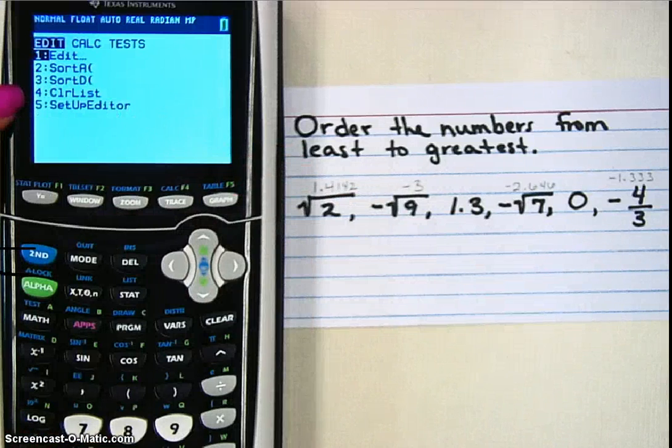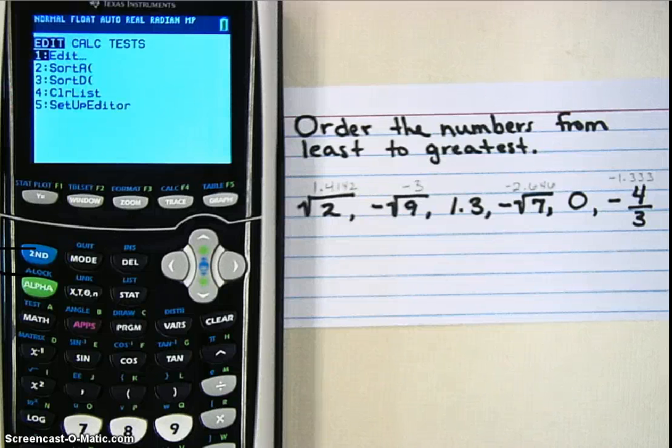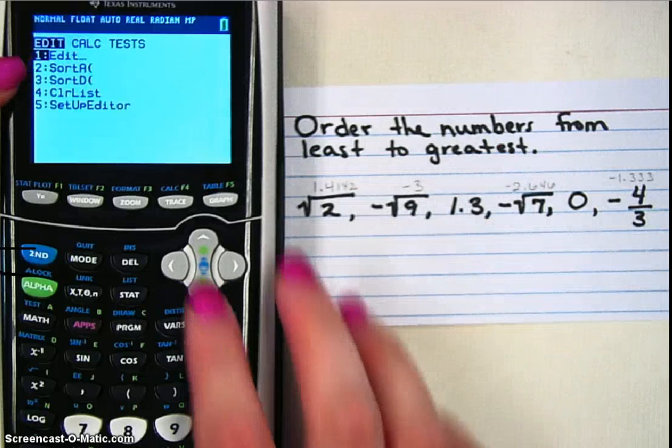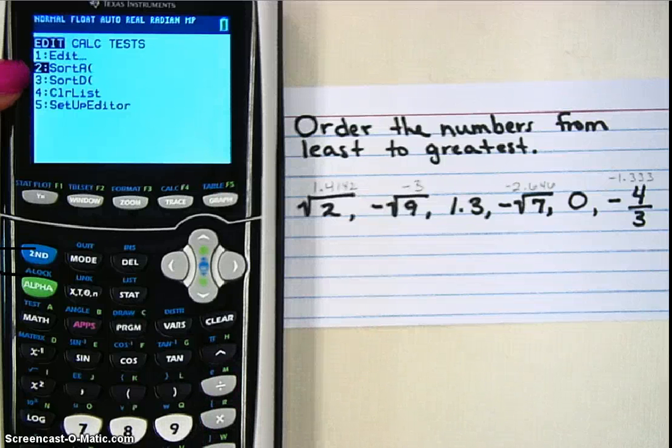Ascending, least to greatest. Descending, greatest to least. Since I'm going least to greatest, I need option 2. And I'm going to arrow down and hit enter.